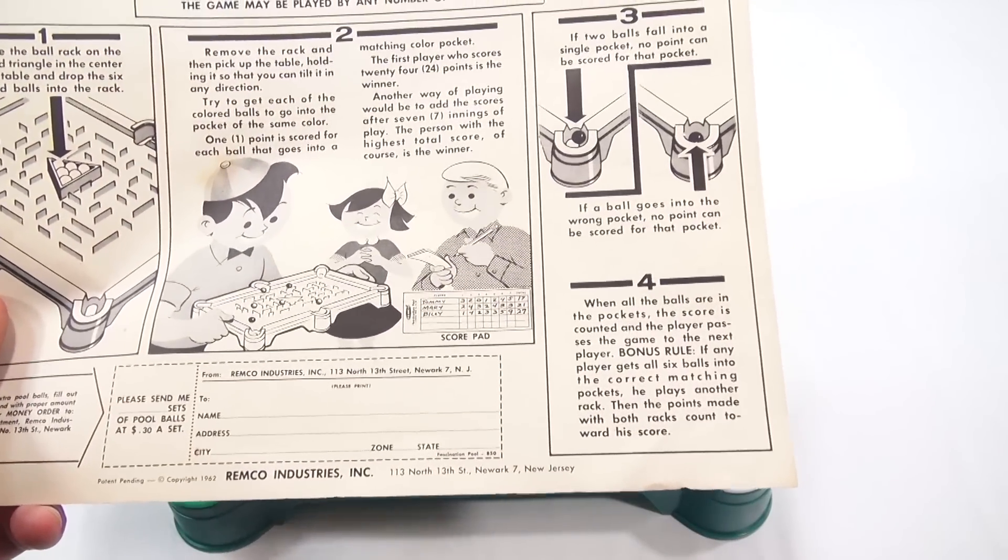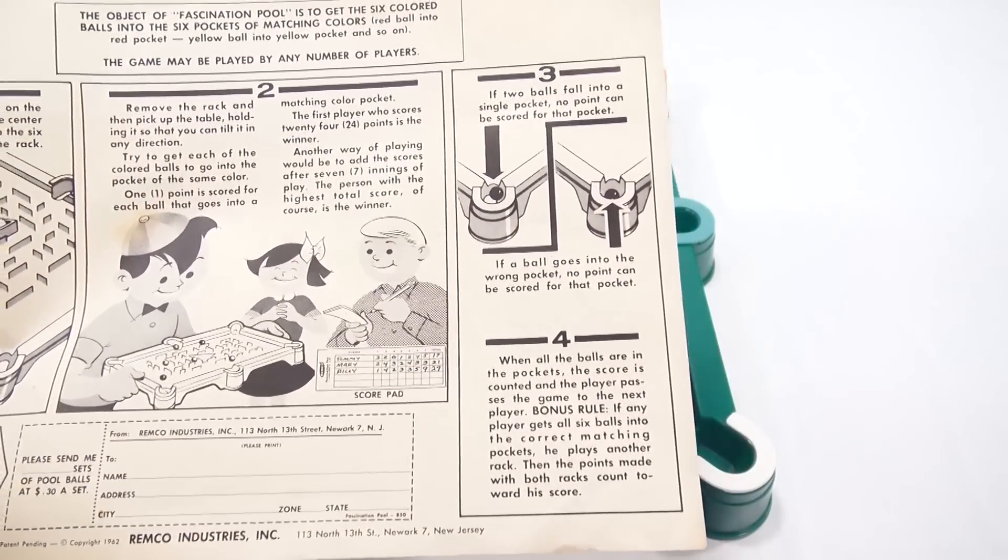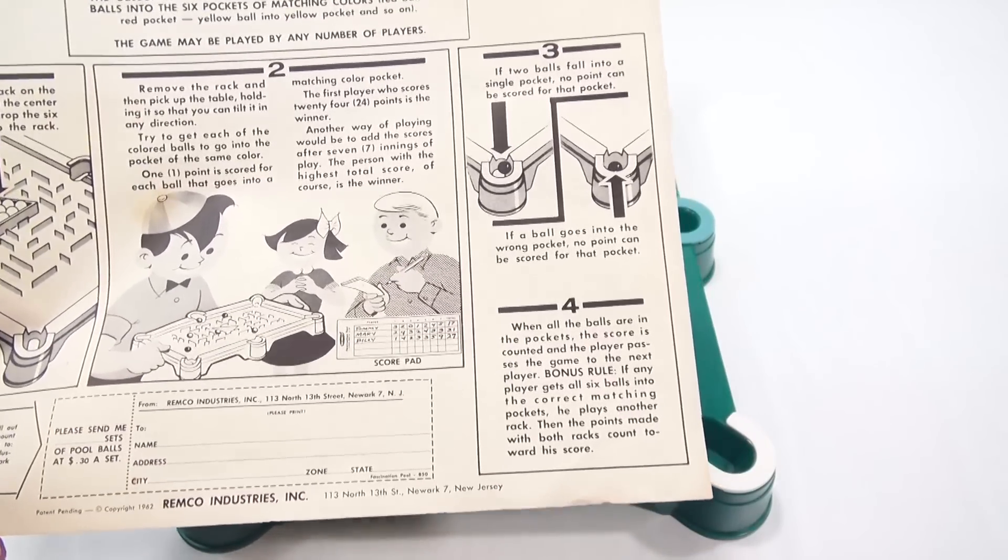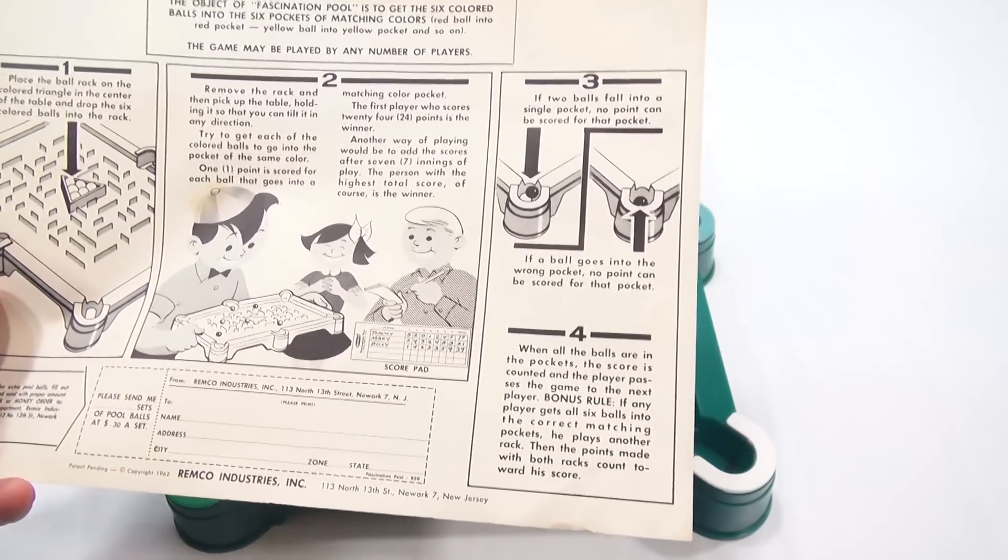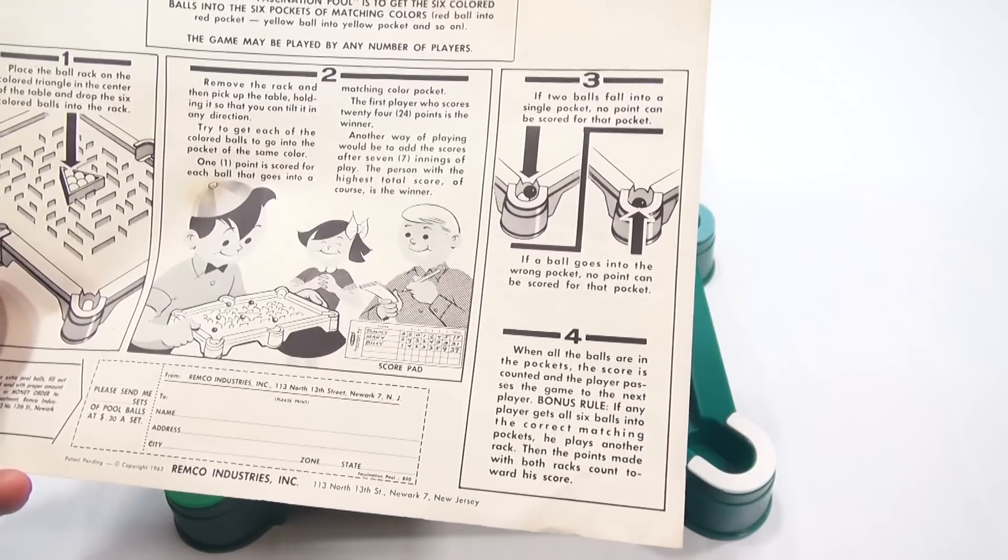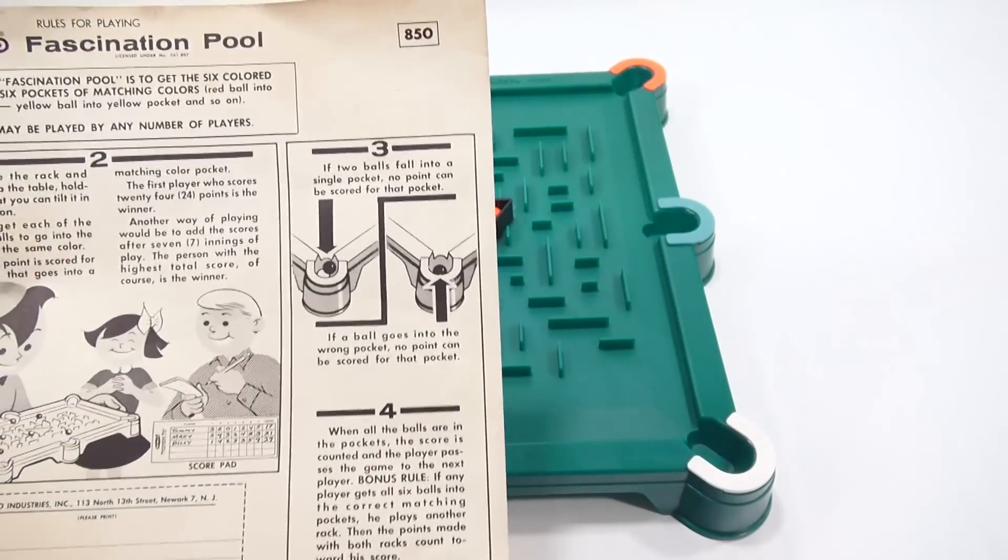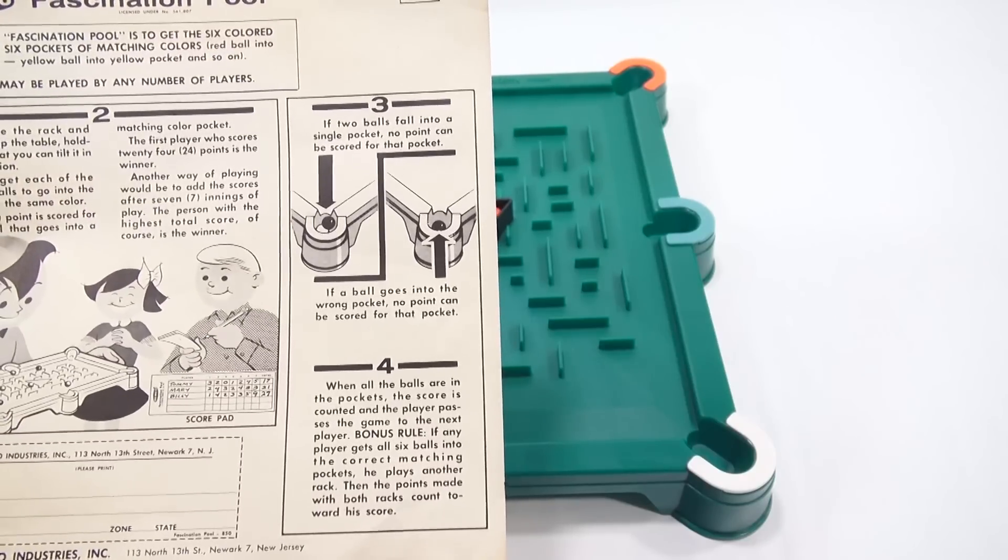One point is scored for each ball that goes into a matching color pocket. The first player who scores 24 points is the winner. Another way of playing would be add the scores after seven innings of play. The person with the highest total score is the winner.